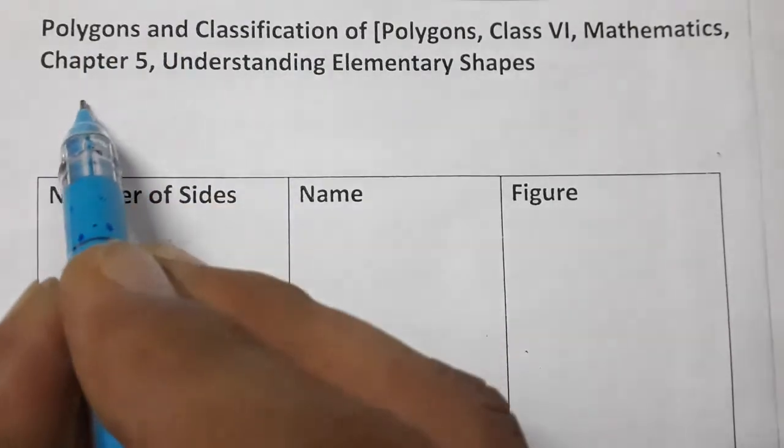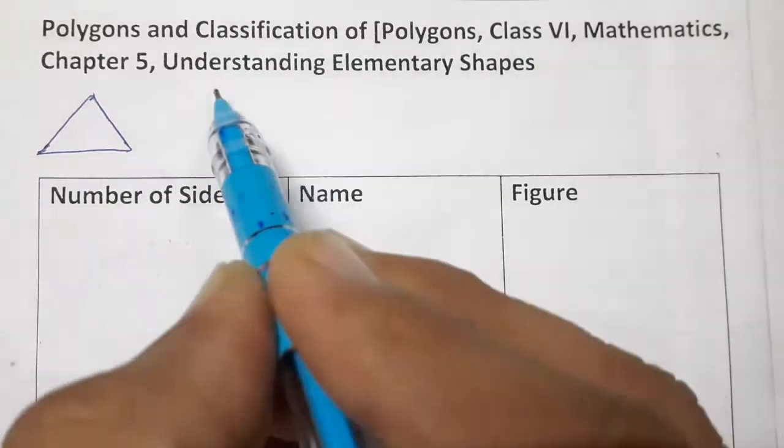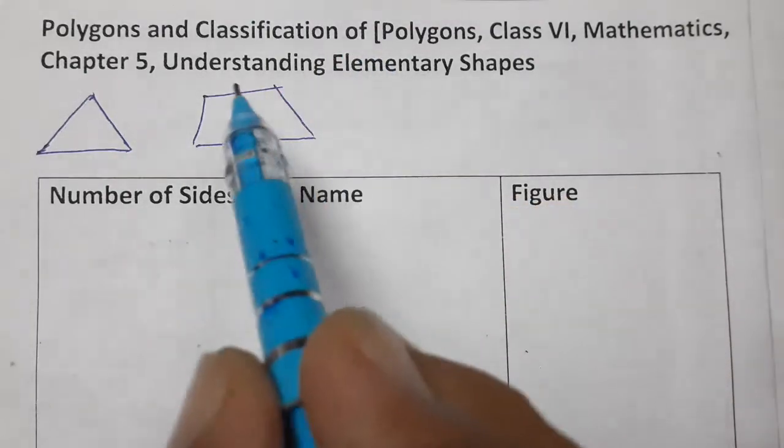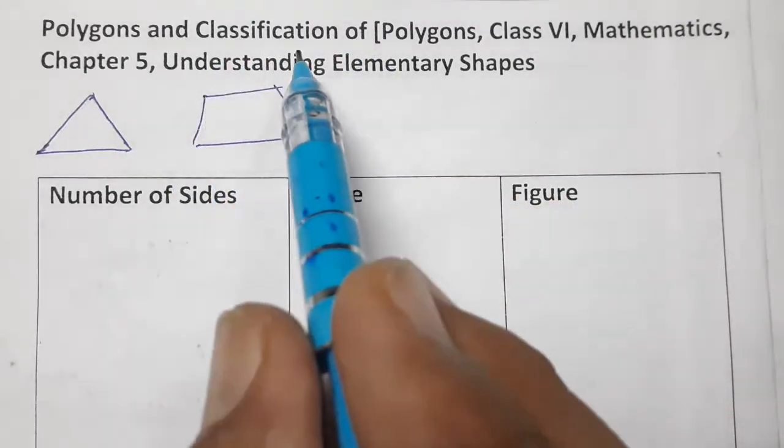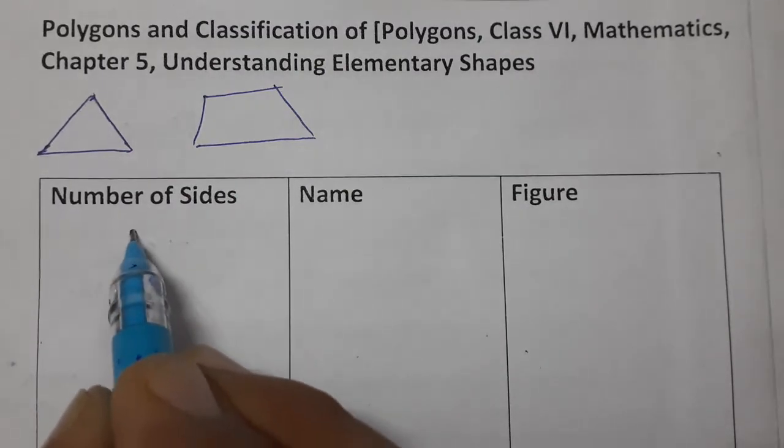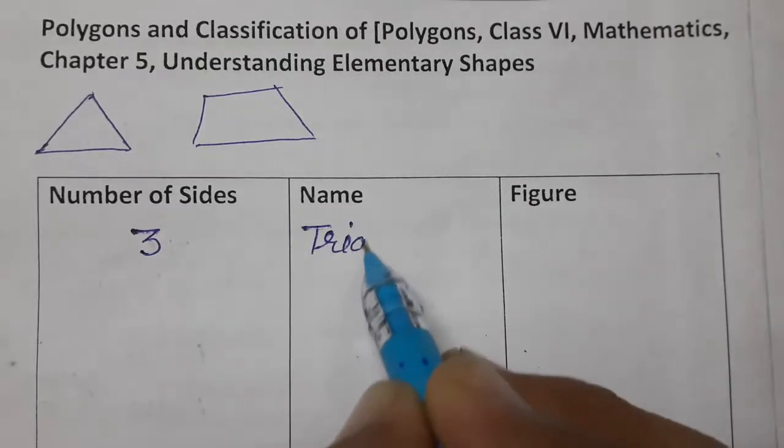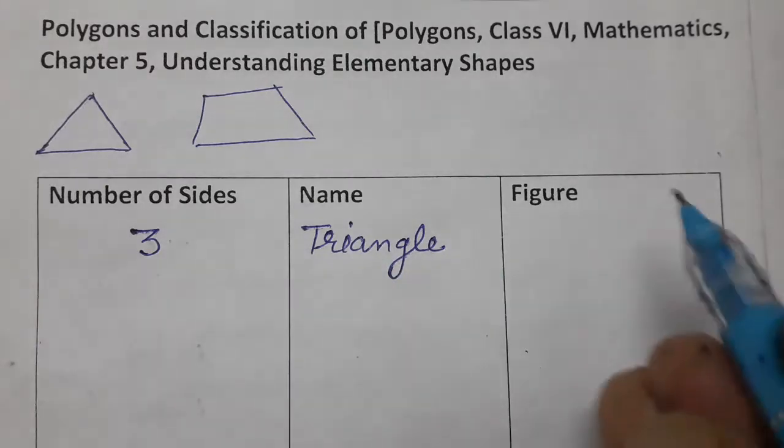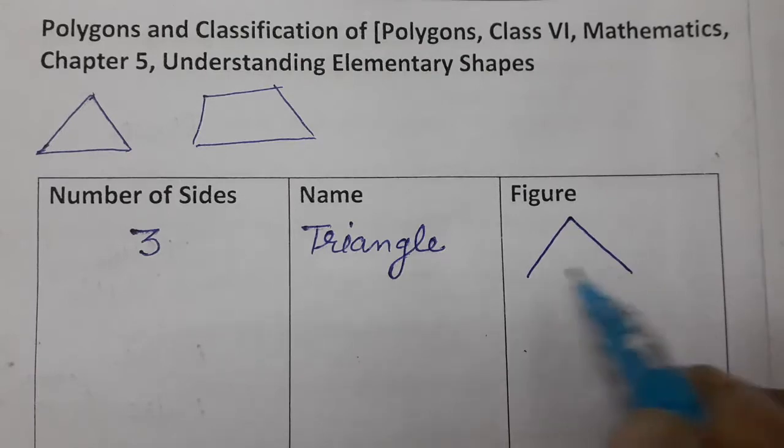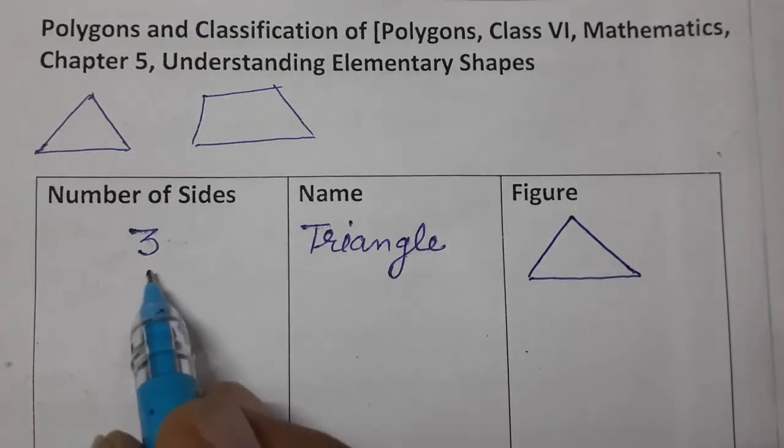See, this is triangle, this is a polygon. You have studied this triangle, you have studied quadrilateral, this is also a polygon. So we will study more about polygons. Let's start. First of all, the least number of sides is 3 and its name is triangle. Triangle is a closed figure made up of 3 line segments. This is a polygon which contains 3 sides.